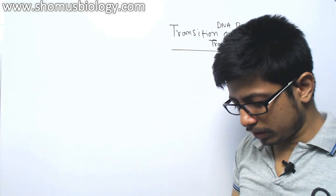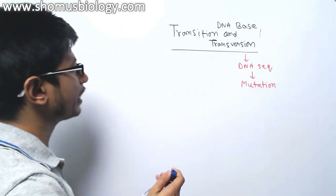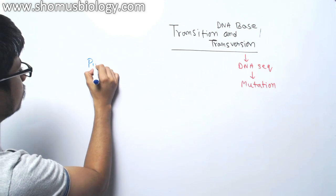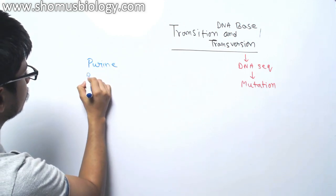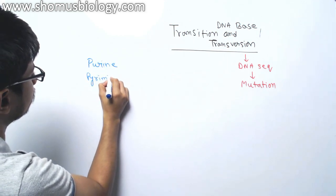So what are those two things? DNA bases consist of two different types: purine and pyrimidine. Let me write them. Two types of bases we see: purine and pyrimidine.